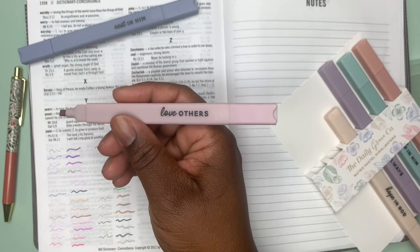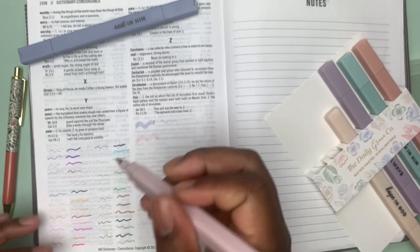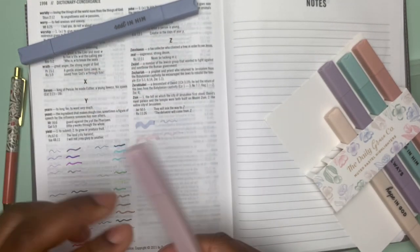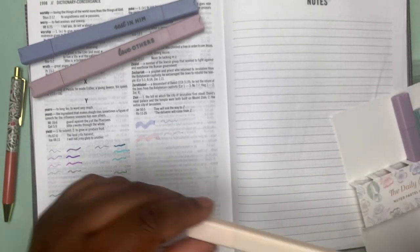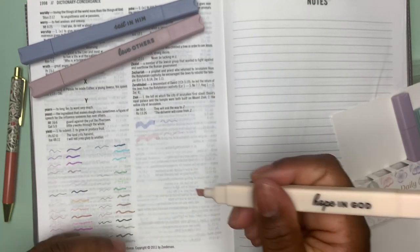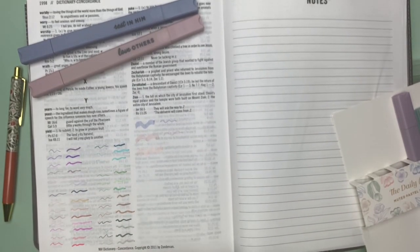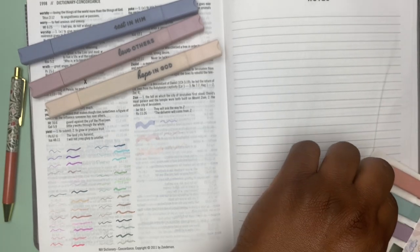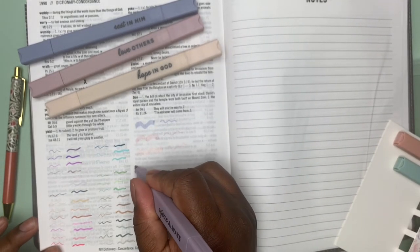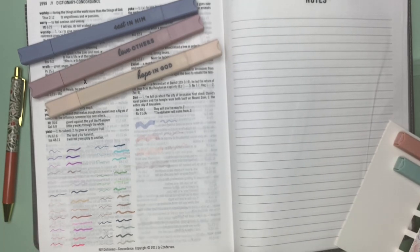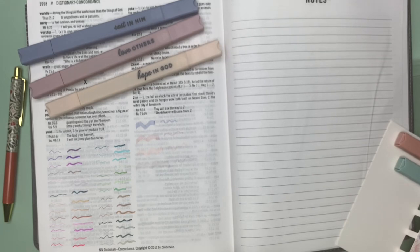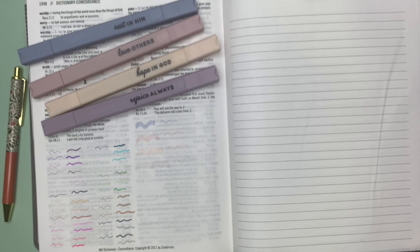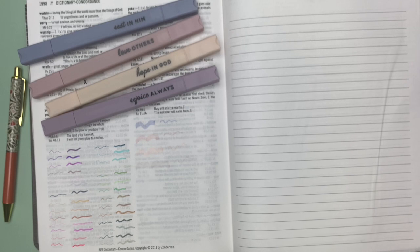This one is love others. Ooh, pretty. And then this one is hope in God. Ooh, that's even lighter. I do like the colors because, especially in my Inspire Bible, it's like I'm highlighting but I don't want it to do too much. I don't want it to be too busy in that Bible. It's so soft and elegant.